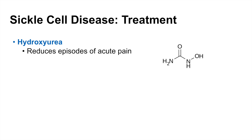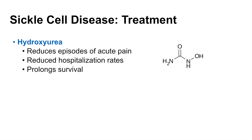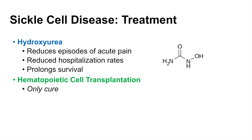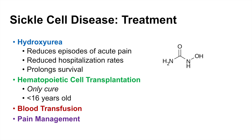Once we diagnose sickle cell disease, how do we treat it? One of the mainstay treatments is hydroxyurea, which can reduce episodes of acute pain, reduce hospitalization rates, and prolong survival. Another possible treatment is hematopoietic cell transplantation, thought to be the only cure for sickle cell disease, usually performed only in individuals less than 16 years old. Blood transfusion can be performed especially in patients with severe anemia and very low hemoglobin. Pain management is also very important due to the many vaso-occlusive symptoms. That was a lesson on sickle cell disease — I hope you found this video helpful, please like and subscribe for more videos.